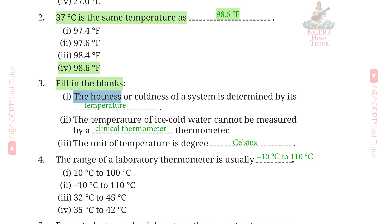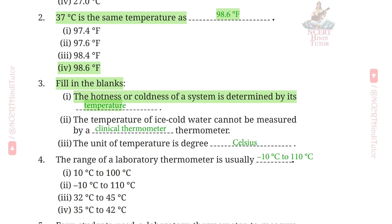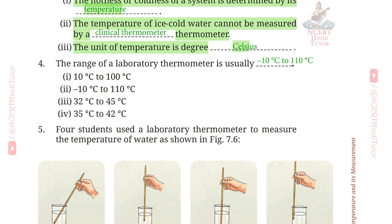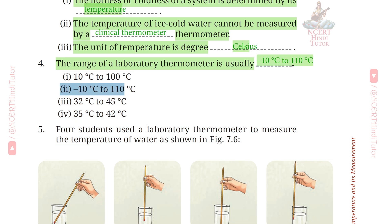Question 3: Fill in the blanks. First, the hotness or coldness of a system is determined by its temperature. Second, the temperature of ice-cold water cannot be measured by a clinical thermometer. Third, the unit of temperature is degree Celsius. Fourth, the range of a laboratory thermometer is usually minus 10 degrees Celsius to 110 degrees Celsius.